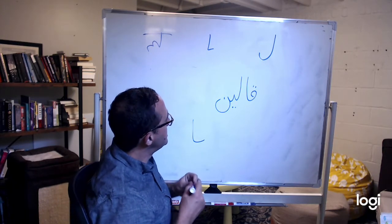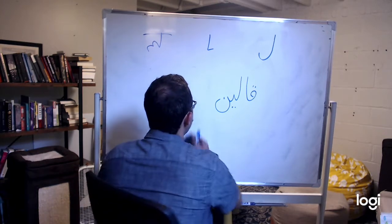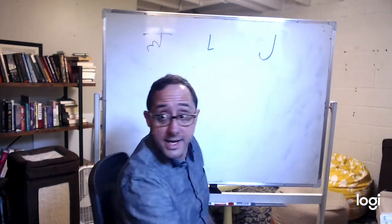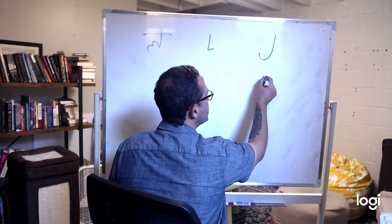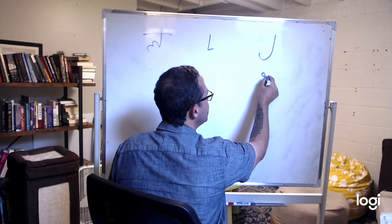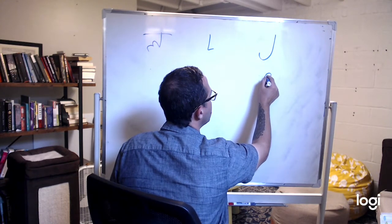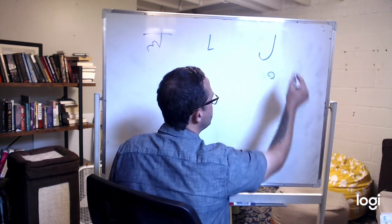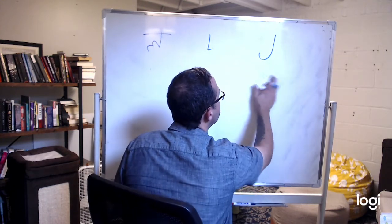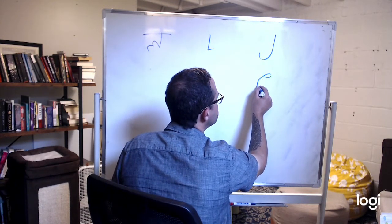Next is M. For the M, we start at this point and instead of going like this like for the F, we go around this way clockwise - we go counterclockwise a little bit this way and down. You see that? Round a little bit this way and down - M.